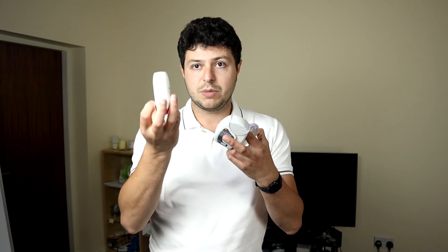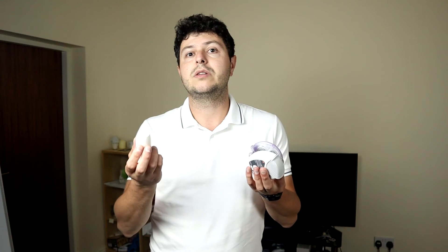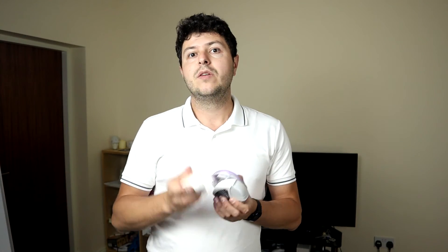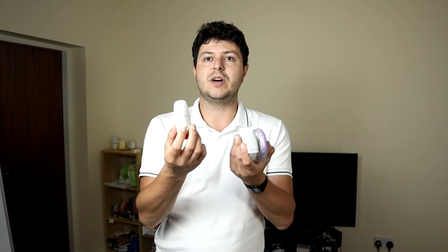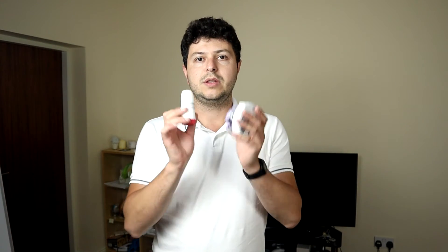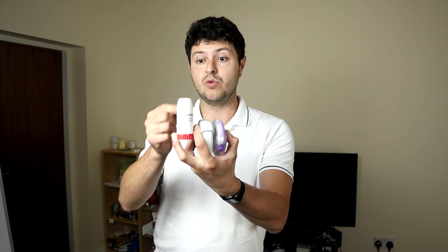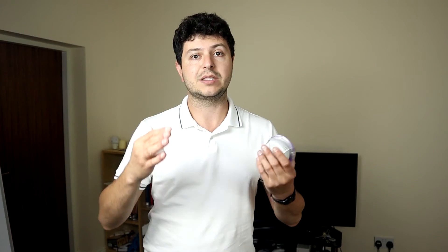The second part of the question relates to using a spacer with Symbicort, Seretide, Relvar, or one of these dry powder inhalers — the DPIs. These inhalers contain a powder inside, such as the Symbicort Turbuhaler, the Relvar, the Seretide, and others. These ones do not produce a mist on their own — you need to produce the force that pulls the powder into your airways. So these are not compatible with spacer devices. For these, you just need to breathe out and then breathe in forcefully when the device is activated. They work differently — they have a powder inside and you need to inhale forcefully to get that powder moving from the device into the deeper parts of your lungs.